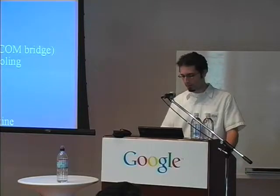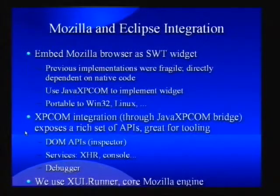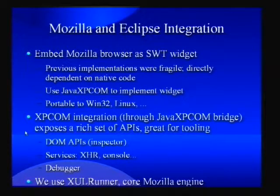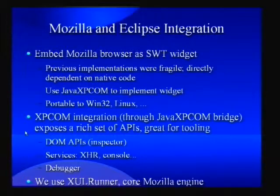We use XUL Runner, which is the current embedding framework for Mozilla. In the future, Firefox, Thunderbird, and others will all be based on top of this XUL Runner layer. That's what we ship with, and currently it ships with the JavaXPCOM libraries — the Java bindings — which I'll get into a little bit later.